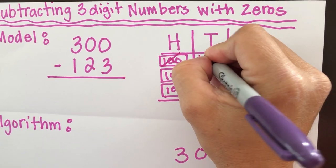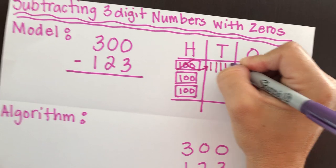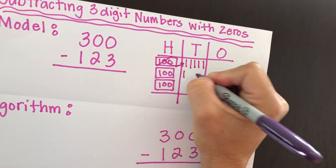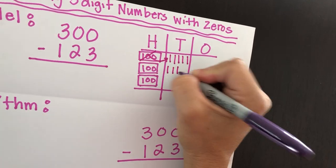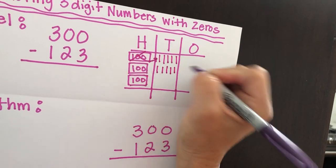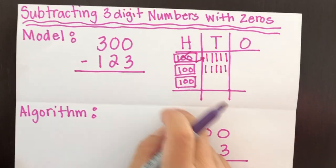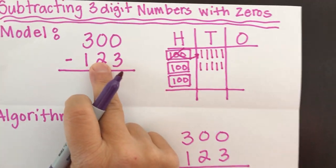10, 20, 30, 40, 50, 60, 70, 80, 90, 100. So now we can subtract from here.